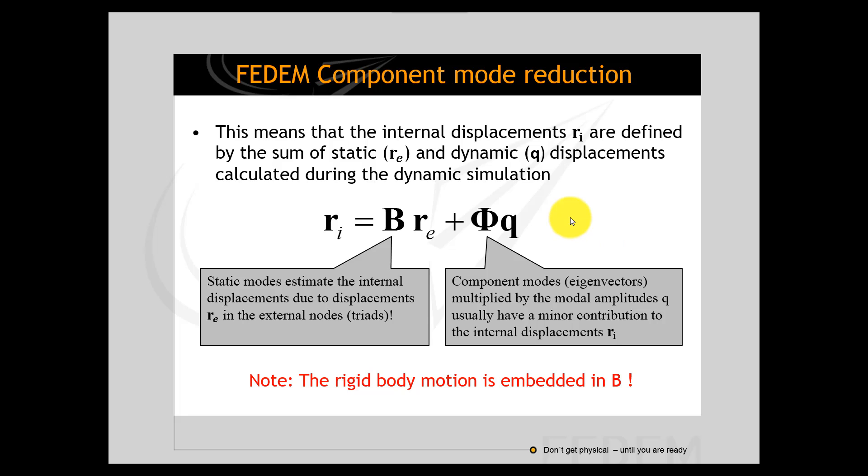This means that after a dynamic simulation you will have access to the R_E vector which are the external displacements for all triads in the complete mechanism model. And then you use the external displacements and the influence matrices to calculate all internal degrees of freedom in FEDEM. And you use that one in order to calculate strains and stresses.